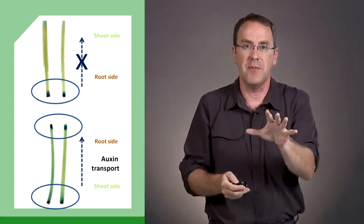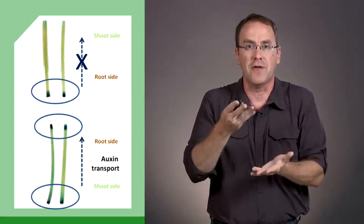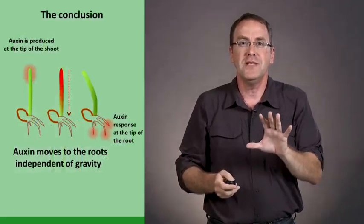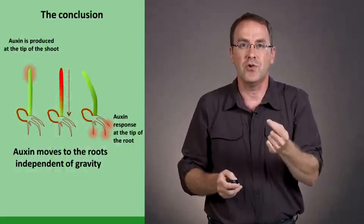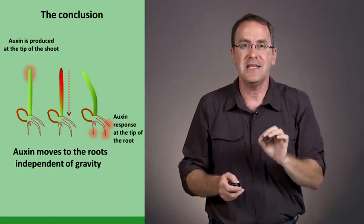Of course, if we do a control experiment where no auxin is added, we see very little of the blue color because there's no part of the shoot here that makes auxin. So what we've proven in this experiment is that auxin is only transported in one direction, from the shoot to the roots, and this is independent of gravity.